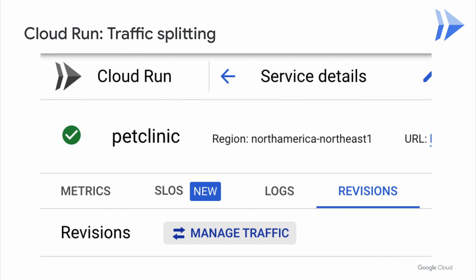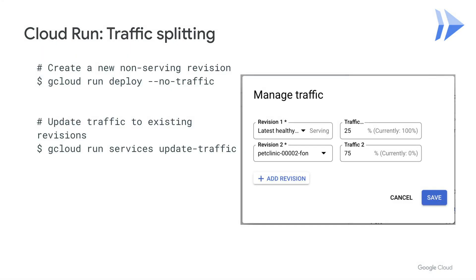Traffic can be controlled through the console or command line for both new and existing revisions. To do a canary release, we can simply deploy a new version of our service and configure it to serve an appropriate percentage of our traffic. Be sure to leave the canary running for a reasonably long time to gather usage data and allow the build to reveal any possible issues. Once we're confident that our canary version is stable, we can adjust it to serve the rest of our traffic and the release is complete.